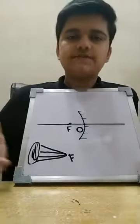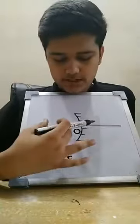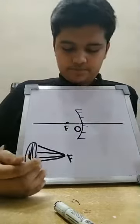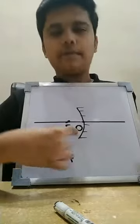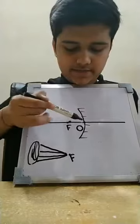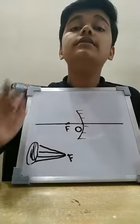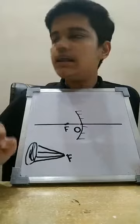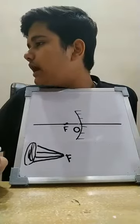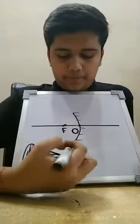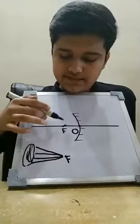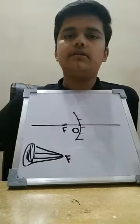Now, there is one more term related to the focus and the optical center. The distance between the optical center — that means point O — and the focus — point F — is called the focal length.